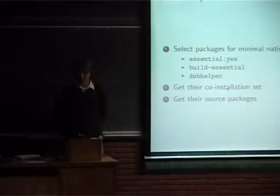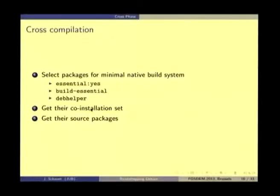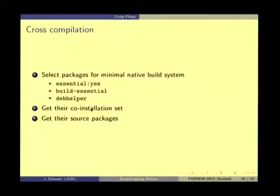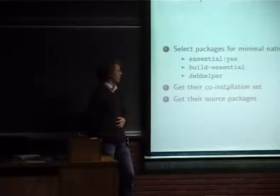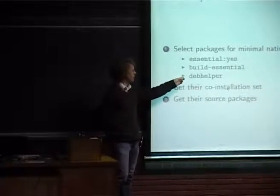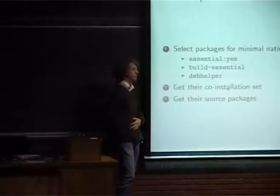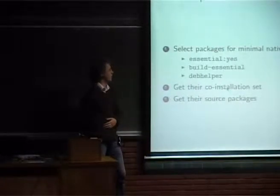The whole process of bootstrapping binary distributions for a new architecture starts with cross-compilation of a minimal build system — one that contains enough binary packages so we can start compiling source packages natively. For Debian, this is implicitly all essential binary packages and the build-essential package. And because over 80% of the archive depends on debhelper, it is easier to include debhelper in the minimal native build system than to solve all the dependency cycles to build its dependencies natively.